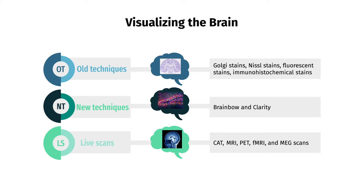More recent techniques, like brain clarity, can allow us to look at whole networks. There are also other imaging techniques which allow us to look at a live brain. These include CAT scans, which use x-ray radiation; MRI, which uses radiofrequency energy; PET, which uses temporarily radioactive glucose to measure brain activity; fMRI, which uses oxygen consumption to map brain activity; and MEG, which uses the brain's magnetic fields to map brain activity.